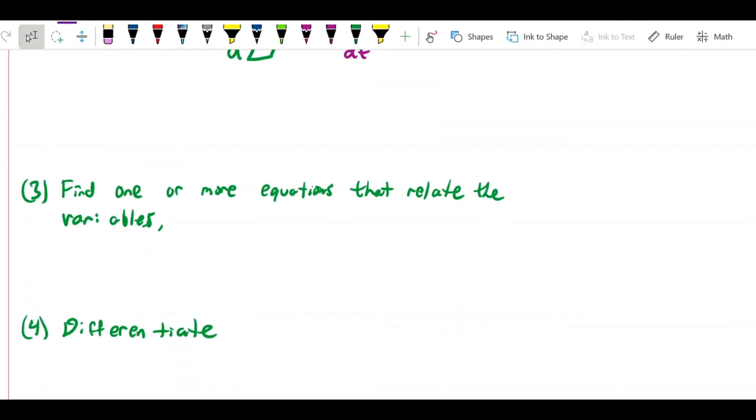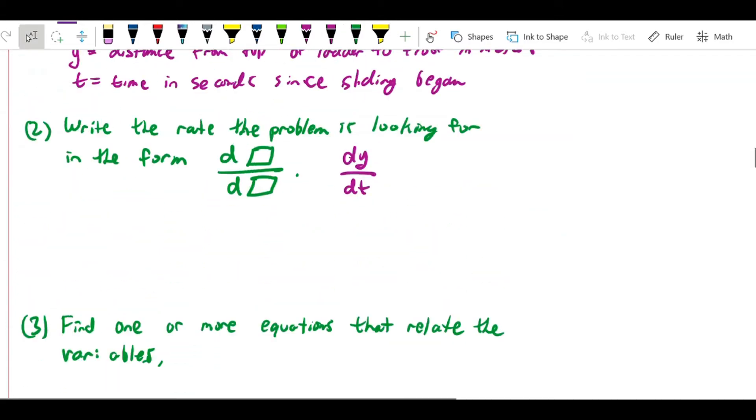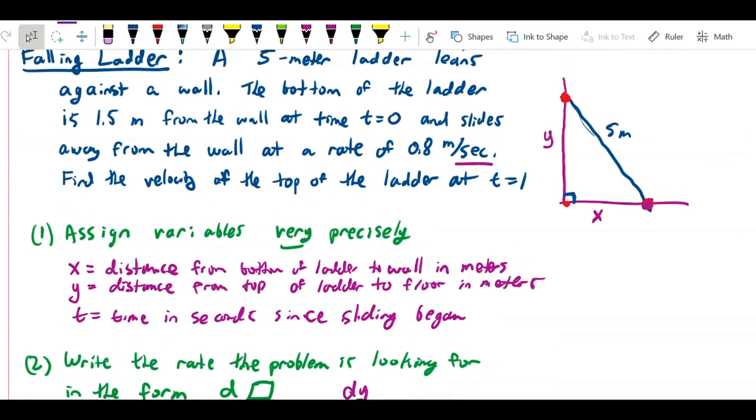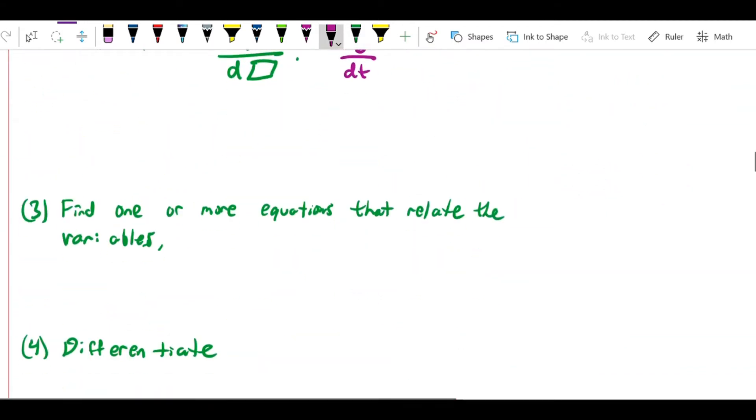Next question is, find one or more equations that relate the variables. We can easily see by the Pythagorean theorem that this is a right triangle. We know that the length of the ladder doesn't change, but the square of the hypotenuse is equal to the sum of the squares of the remaining two sides. So x squared plus y squared equals 5 squared, or 25.